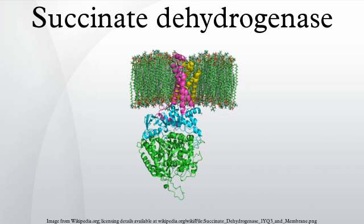After the electrons are derived from succinate oxidation via FAD, they tunnel along the relay until they reach the cluster. These electrons are subsequently transferred to an awaiting ubiquinone molecule within the active site. The iron-sulfur electron tunneling system is shown in image 9.